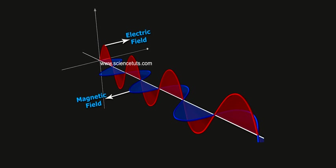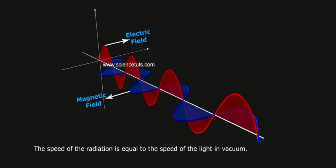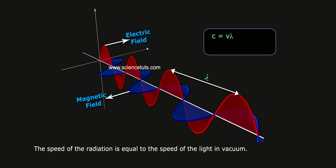Electromagnetic radiations travels with same speed. The speed of the radiation is equal to the speed of the light in vacuum. C is equal to V lambda is equal to 3 into 10 power 8 meters per second.